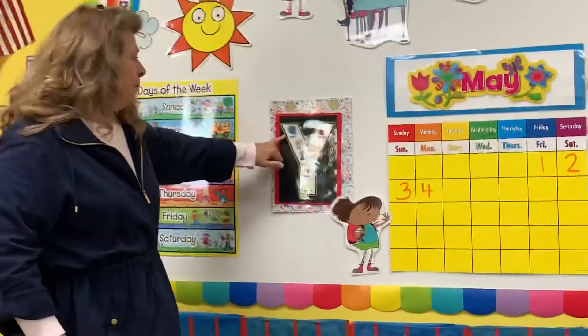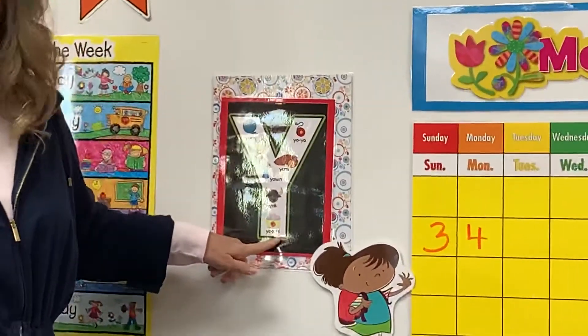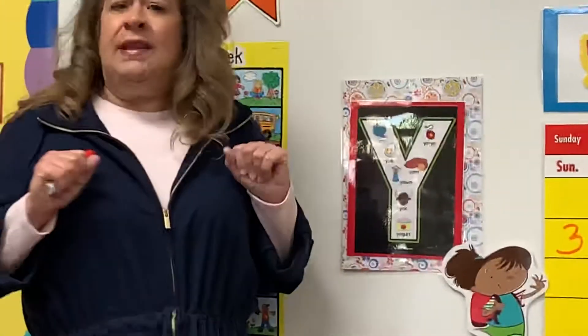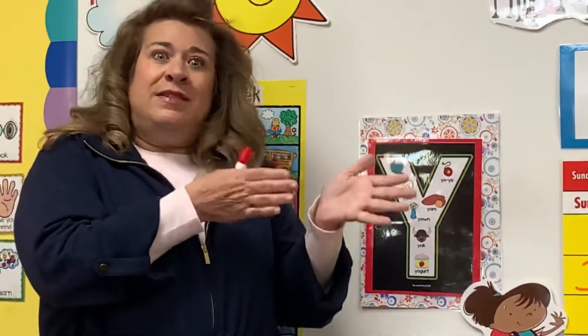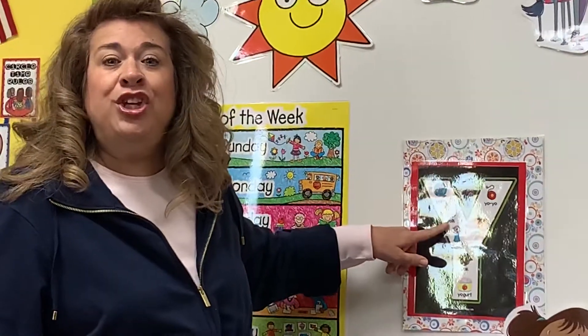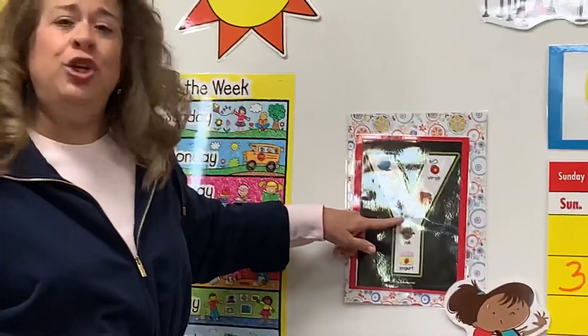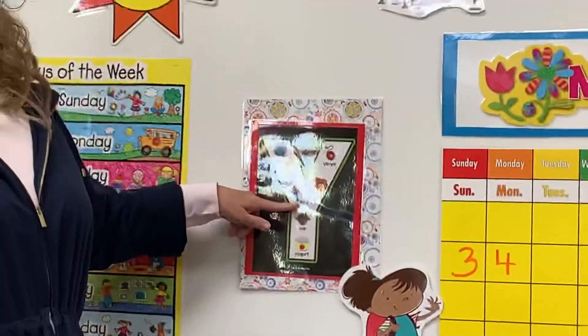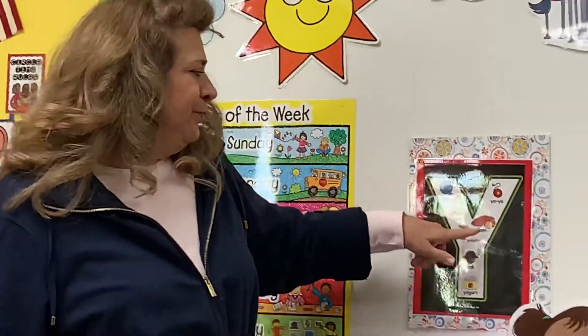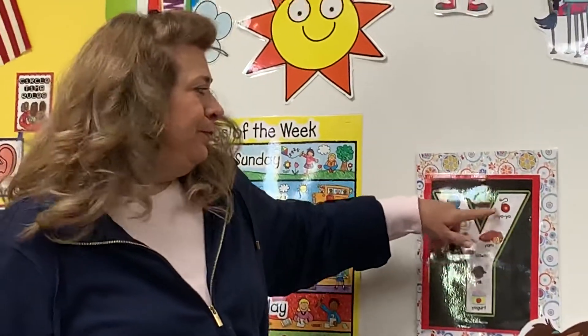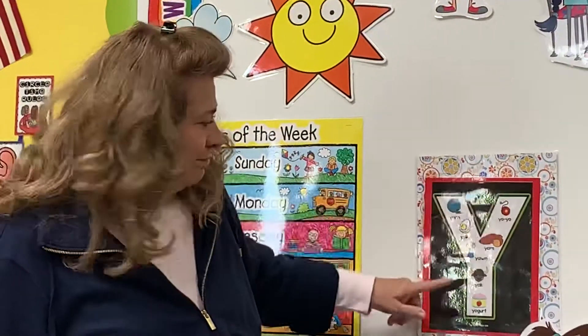Let's look at our letter of the week. It's going to be Y. Now Y is a tricky letter — it's sometimes a consonant and it's sometimes a vowel. When it's a consonant it makes the sound Y, like yarn, yolk, yawn, yam, yo-yo, yak, yogurt.